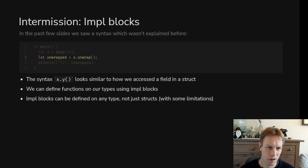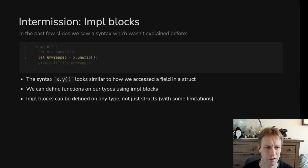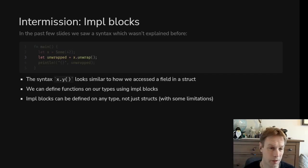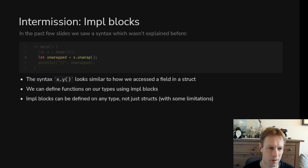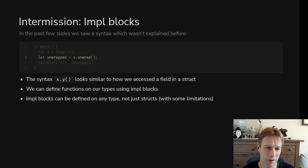In the previous video and possibly other places we used methods on objects. We didn't really explain what methods are. So here's an example: we say x.unwrap, and unwrap is a method. If you're familiar with other programming languages you'll have seen this kind of syntax before. Basically you do the name of the variable, dot, then the method name, and then brackets, or possibly a pair of brackets with arguments in between. It's like calling a function but it's calling a function on this thing, and the meaning of that is similar to methods in other languages.